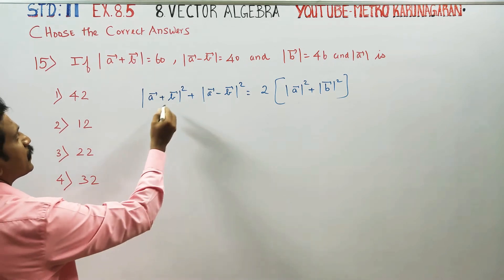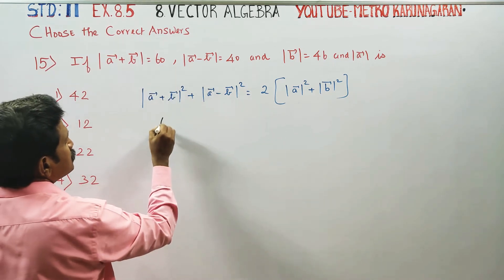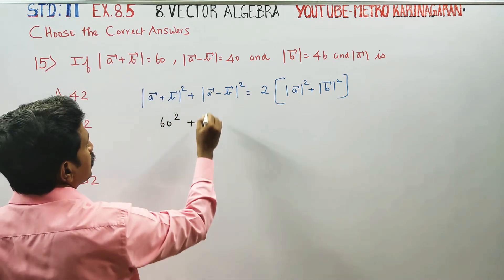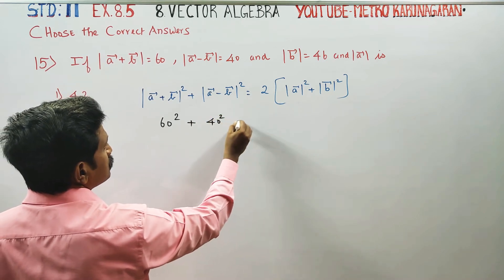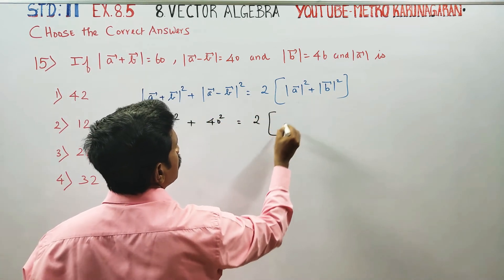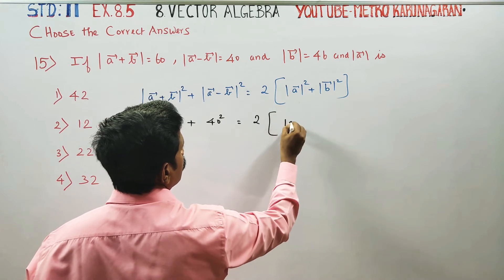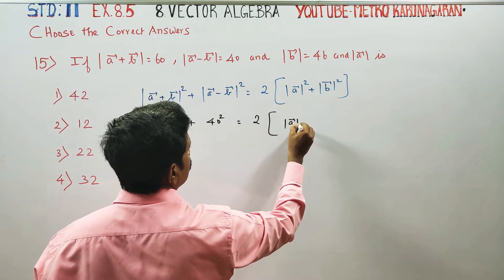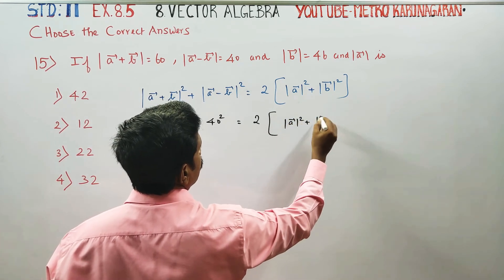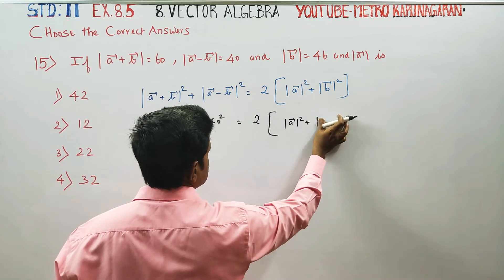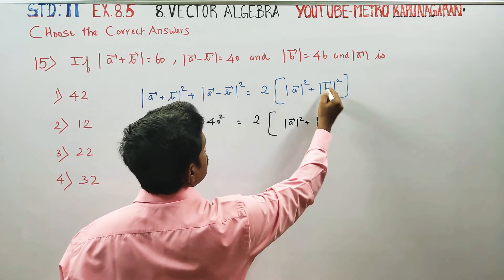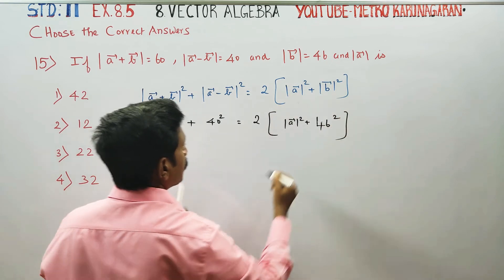Substitute: magnitude of A plus B whole square is 60 squared, A minus B is 40 squared, is equal to 2 times magnitude of A squared plus magnitude of B, which is 46, whole square.